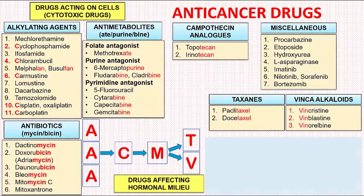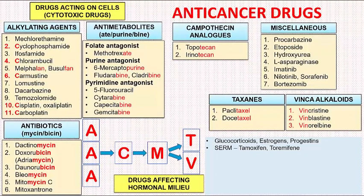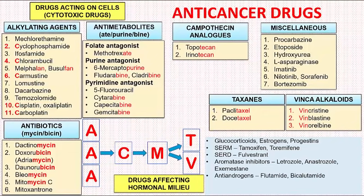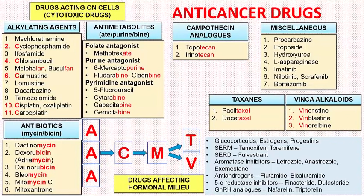Many cancers are either hormone responsive or hormone dependent. In the first case, i.e. hormone responsive, the tumor regresses by hormone therapy. In the second case, i.e. hormone dependent, the tumor regresses by removal of the hormone support. So in this group we have glucocorticoids, estrogens, progestins, SERMs or selective estrogen receptor modulators such as tamoxifen and toremifene, SERDs or selective estrogen receptor down-regulators such as fulvestrant, aromatase inhibitors such as letrozole, anastrozole, and exemestane, antiandrogens such as flutamide and bicalutamide, 5-alpha reductase inhibitors such as finasteride and dutasteride, and GnRH analogues such as nafarelin and triptorelin.